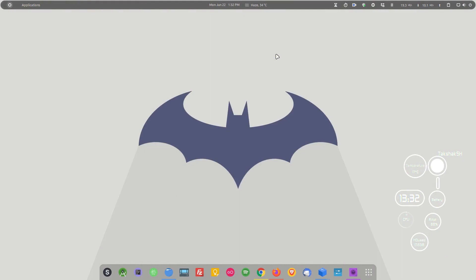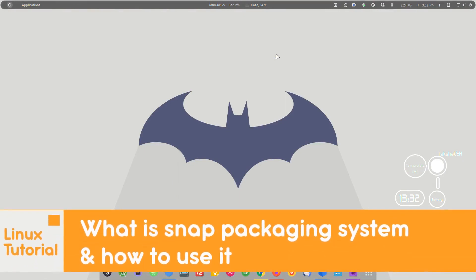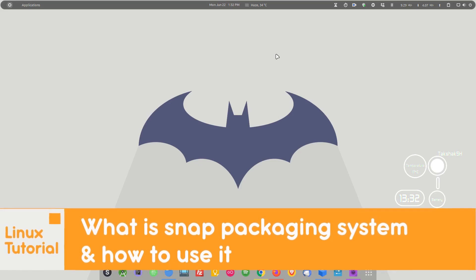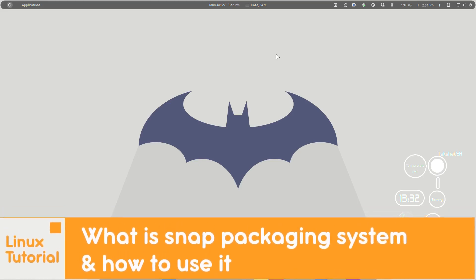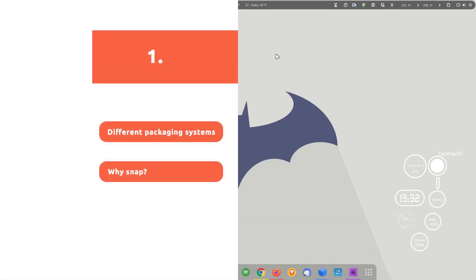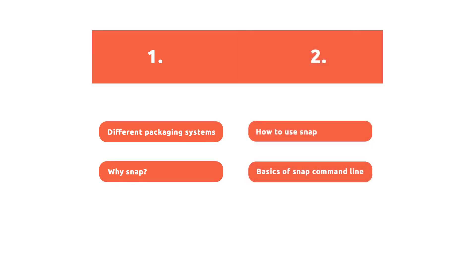Hello there and welcome to Linux. In this video we will talk about what the snap packaging system is and how we can use snap in a Linux distribution. This video is divided into two parts. In the first part we will talk about the different kinds of packaging systems that are available and why Ubuntu created snap to streamline packaging for Linux, cloud, and IoT devices. In the second half we will talk about how to use the snap utility and snap store to manage applications — install, remove, update, and list snap applications.